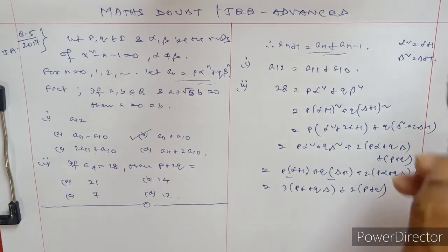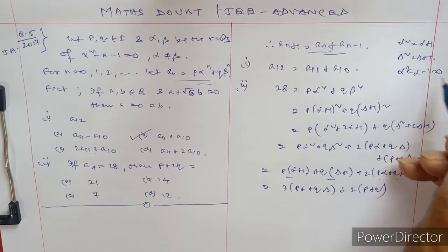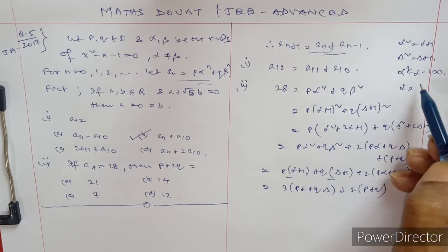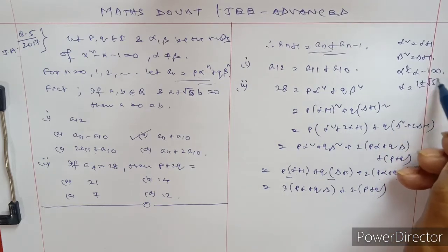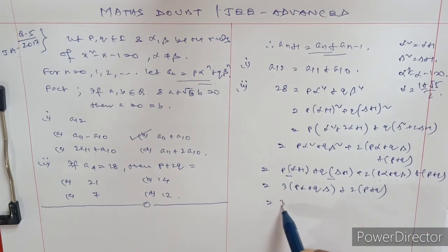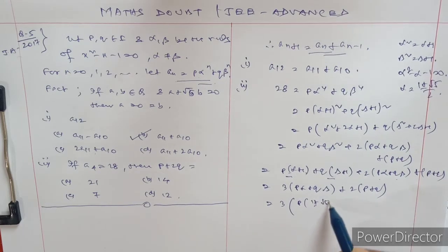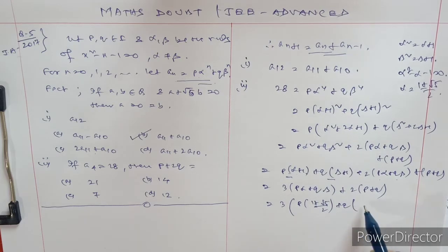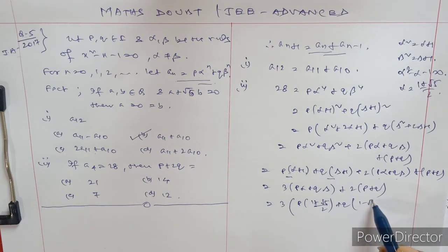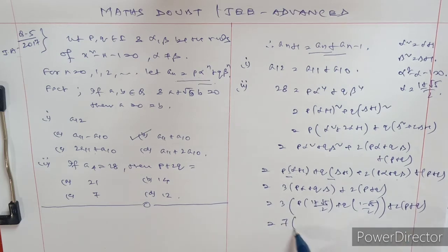Now solving for α: α² - α - 1 = 0. The roots are α = (1 + √5)/2 and β = (1 - √5)/2. Substituting back: 3(pα + qβ) + 2(p+q) = (3p/2 + 3p/2) and 2(p+q). So this gives (7/2)p + q, plus the irrational part.